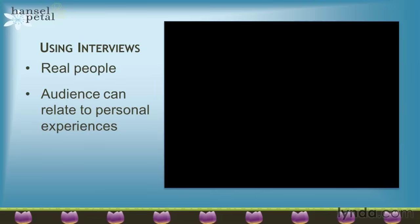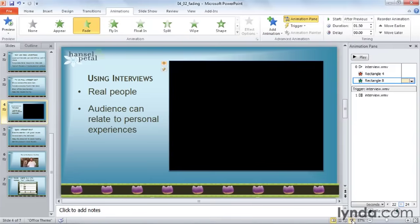And there's our fade out. So we've created a fade in from black and a fade out to black by using three objects, animations, and animation timings. The ability to create this fade will definitely smooth out the flow of your presentation so that your media doesn't jolt the audience.